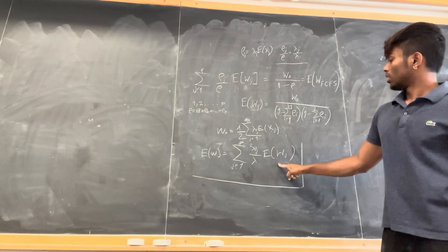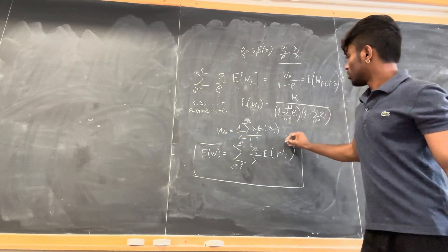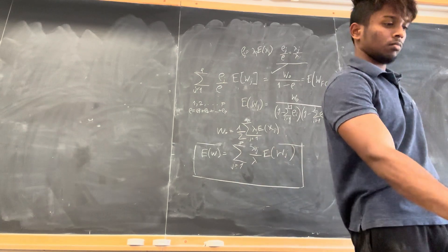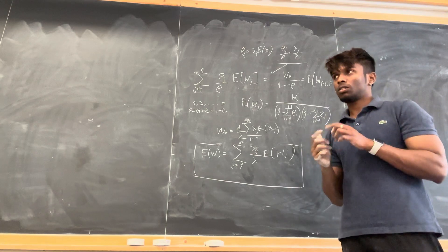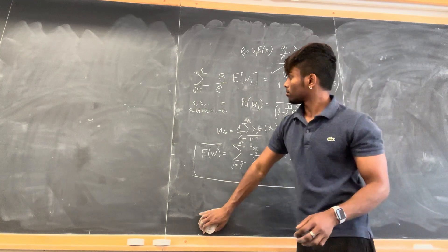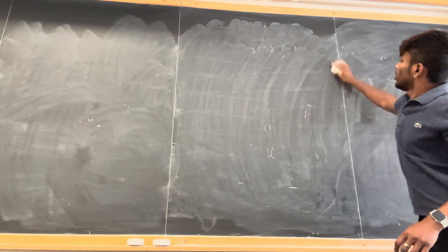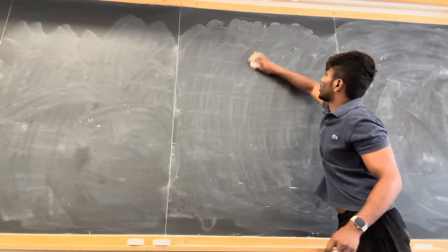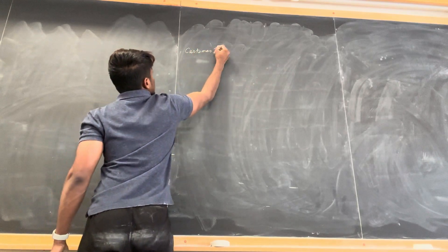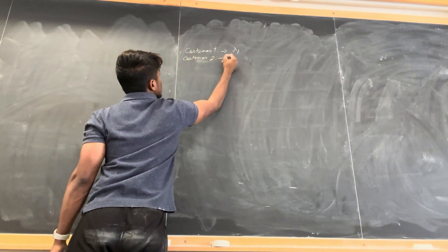We know that λ_j is the Poisson arrival rate for the jth class of customer. Now we should work out an example to better understand this. Let's say two customers arrive — customer 1 has Poisson arrival rate λ_1, and customer 2 has Poisson arrival rate λ_2.